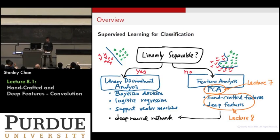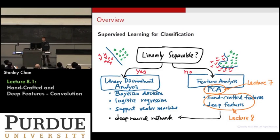Last lecture we talked about a very old method called principal component analysis. Today we are going to talk about more towards the computer vision side — that's about deep neural networks, how do you pull the features from there, and then before the deep neural network age, what are the available methods?